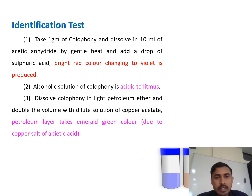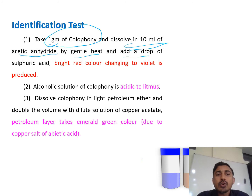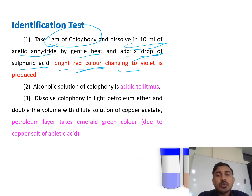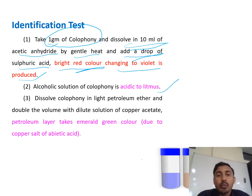There are three important chemical tests to identify colophony. The first test: take one gram of colophony and dissolve it in 10 ml of acetic anhydride by gentle heat, then add a drop of sulfuric acid — a bright red color is obtained which changes to violet. The second test: an alcoholic solution of colophony is acidic to litmus.